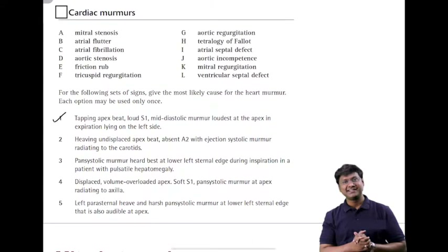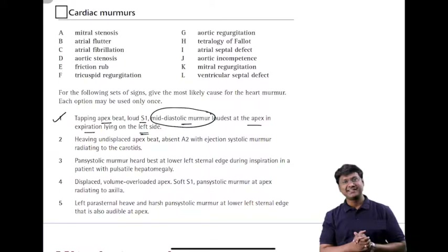The first clinical scenario: the patient has a tapping apex beat, loud S1, mid-diastolic murmur loudest at the apex, in expiration, lying on the left side. Mid-diastolic murmur occurs in two conditions — mitral stenosis and tricuspid stenosis. Since the murmur is heard at the apex and increases on expiration, it is very suggestive of mitral stenosis.